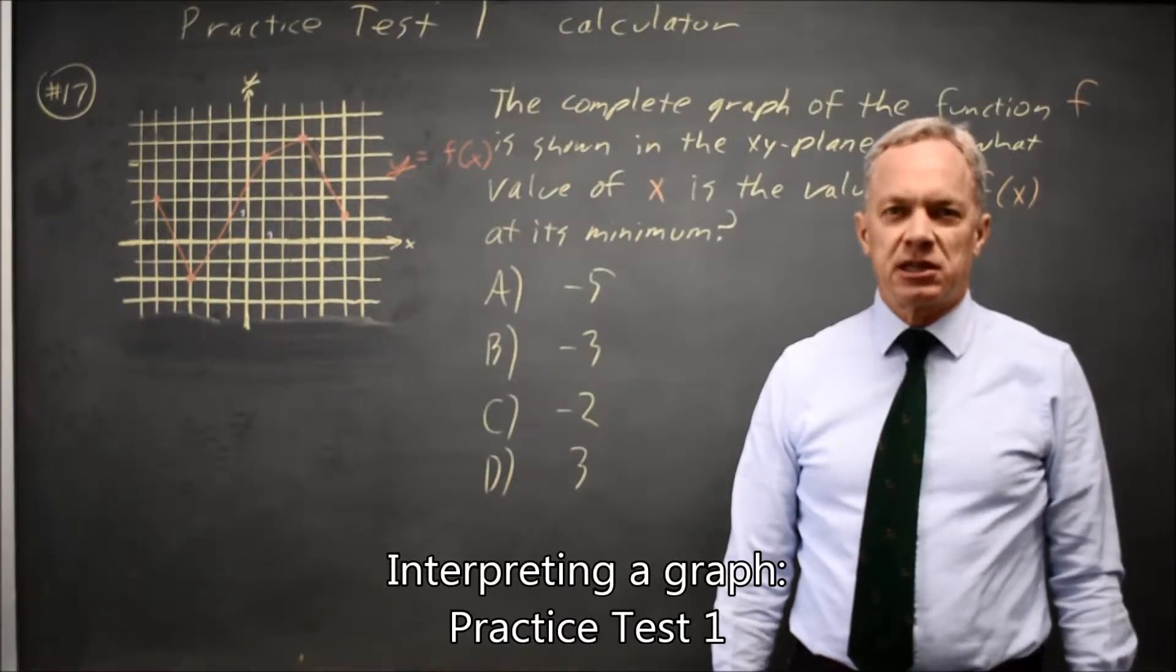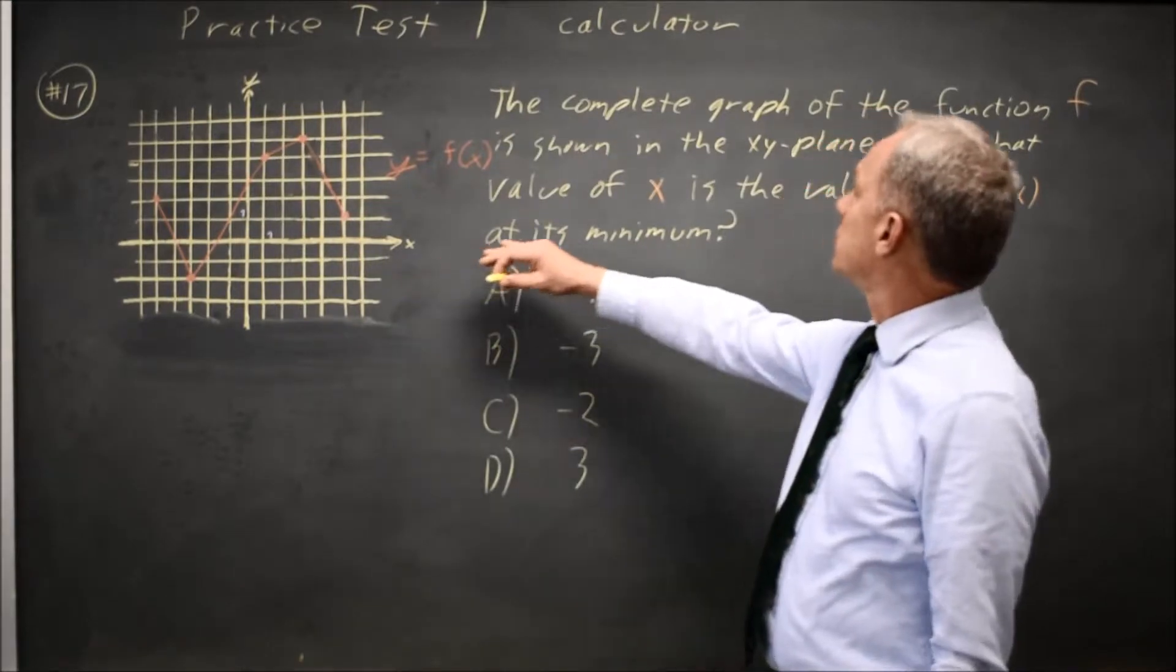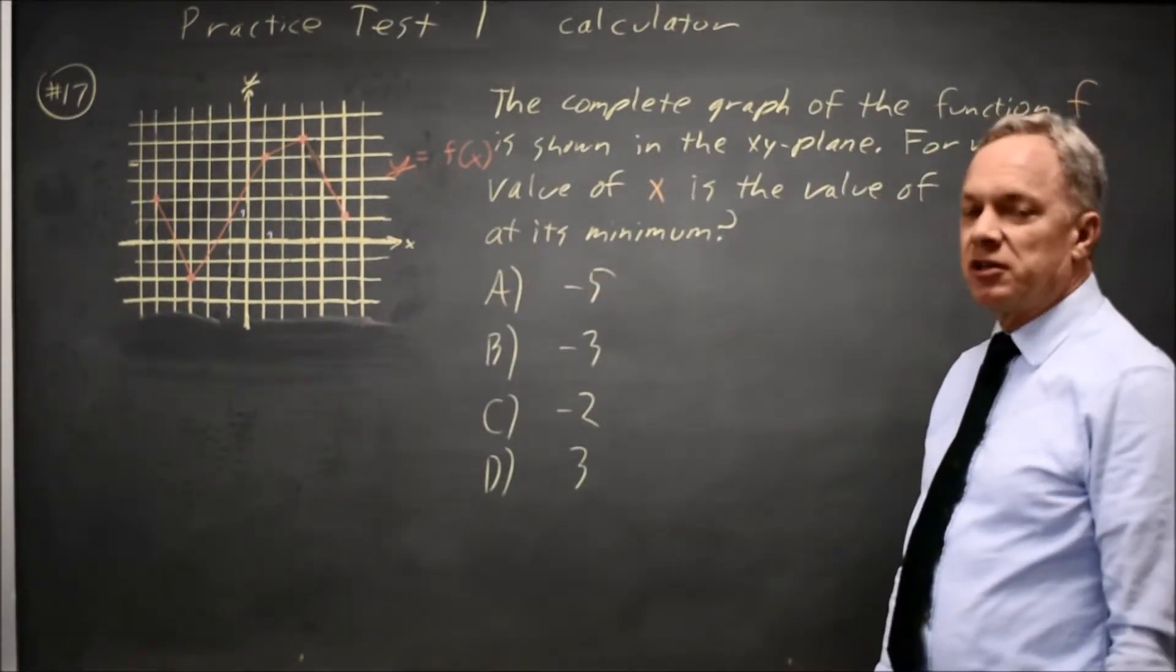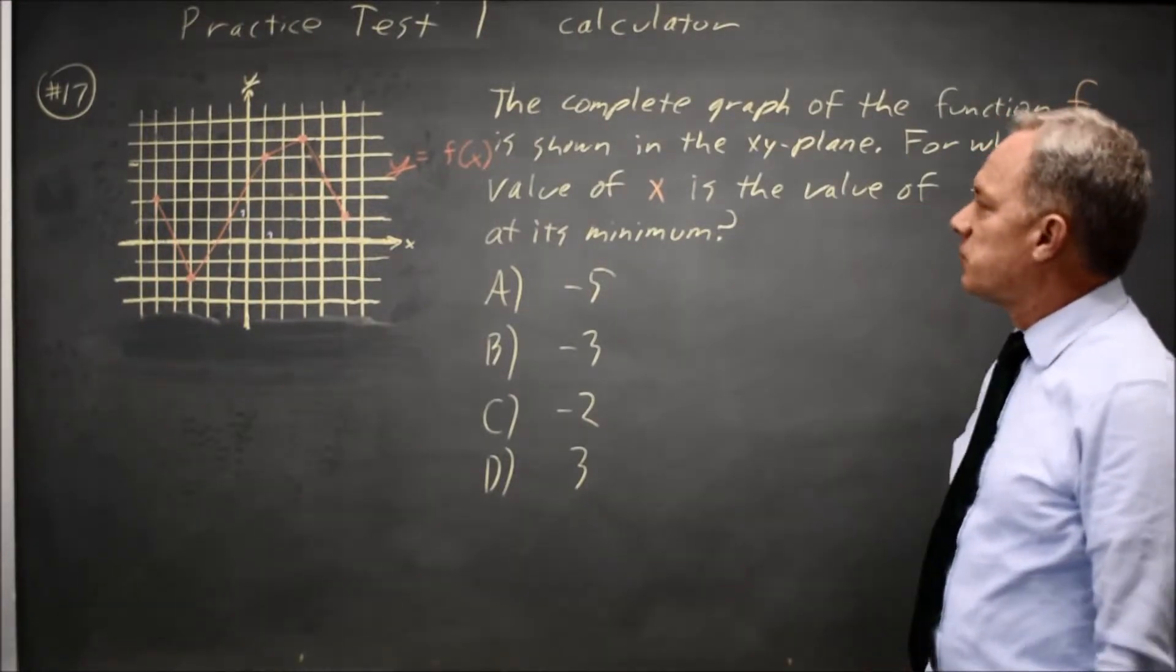This is calculator question number 17 from practice test 1. College Board gives us a graph of the function f and asks for what value of x is the value of f(x) at its minimum.